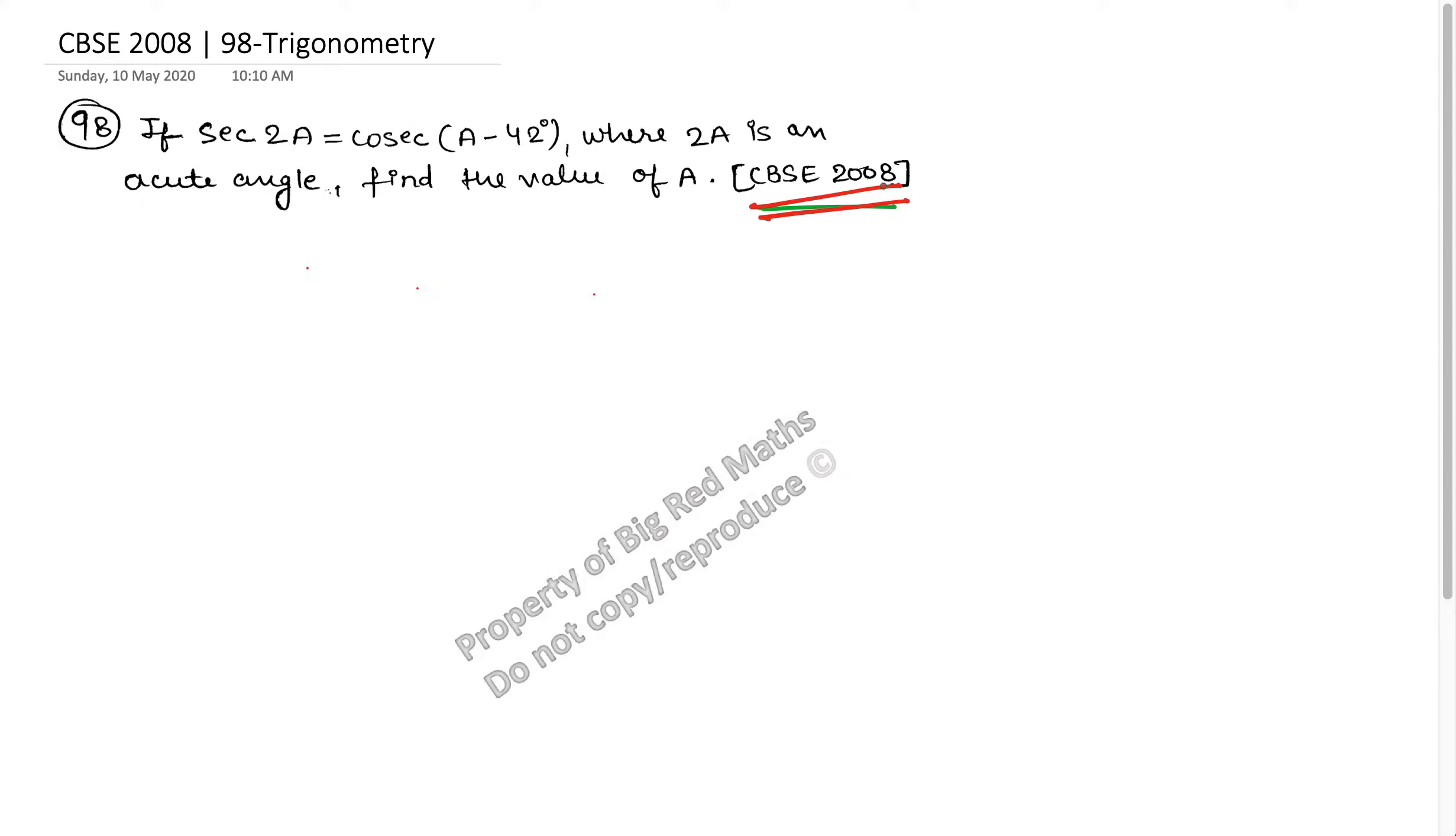Now let's solve this. We'll use a very simple formula here. We know that cosec of theta is equal to sec of 90 minus theta.